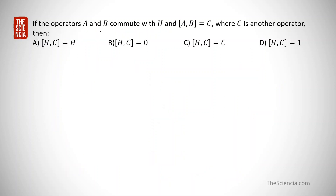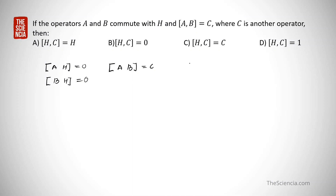The next problem: operators A and B commute with H, meaning the commutator of A with H equals zero and the commutator of B with H equals zero. An additional condition is that the commutator [A, B] equals C, where C is another operator. We need to find the commutator [H, C].